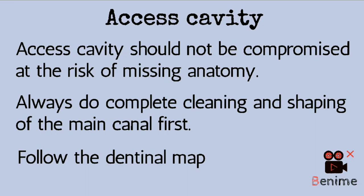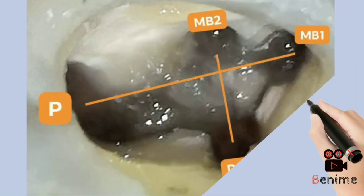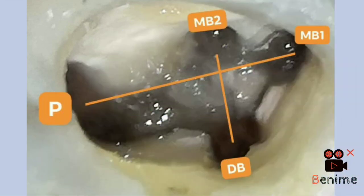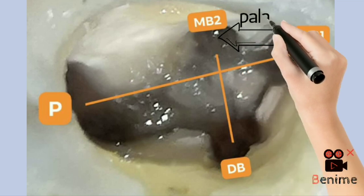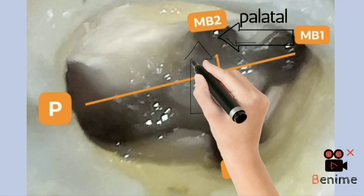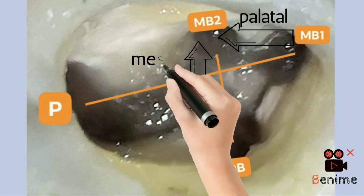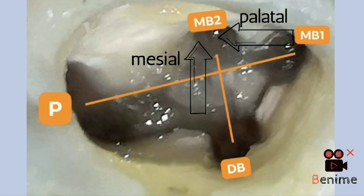A tip to make it much easier: first start with cleaning and shaping of the main canals, which includes distobuccal, MB1, and palatal. Then follow the path of the dentinal map to locate MB2. The MB2 canal is palatal and often mesial to a line drawn between MB1 and the palatal canal. To put it simply, MB2 is located under the mesial marginal ridge.